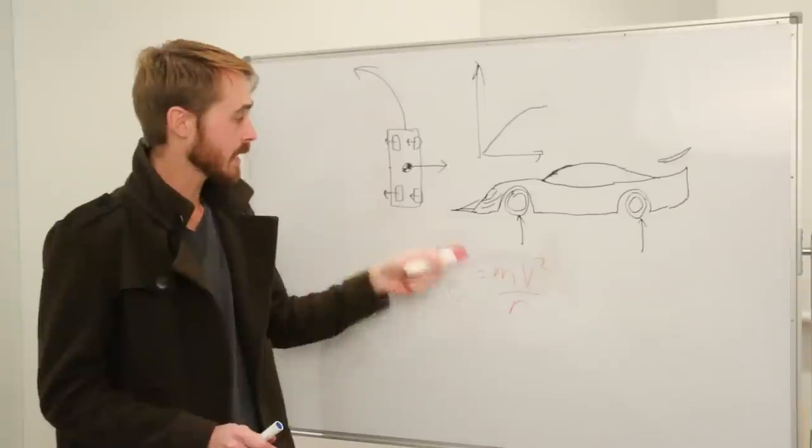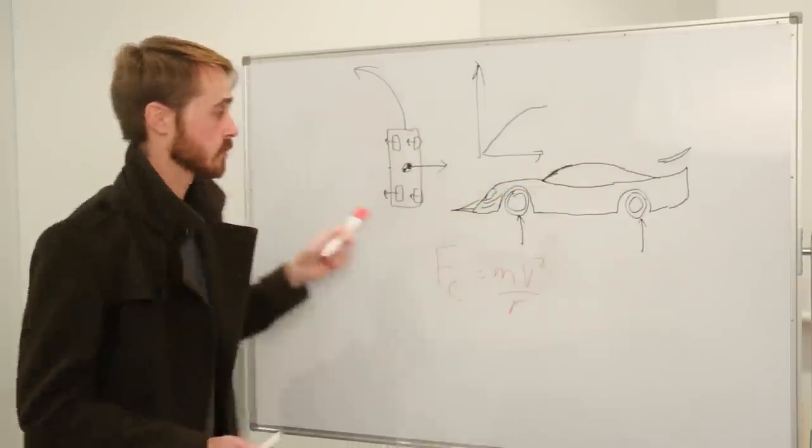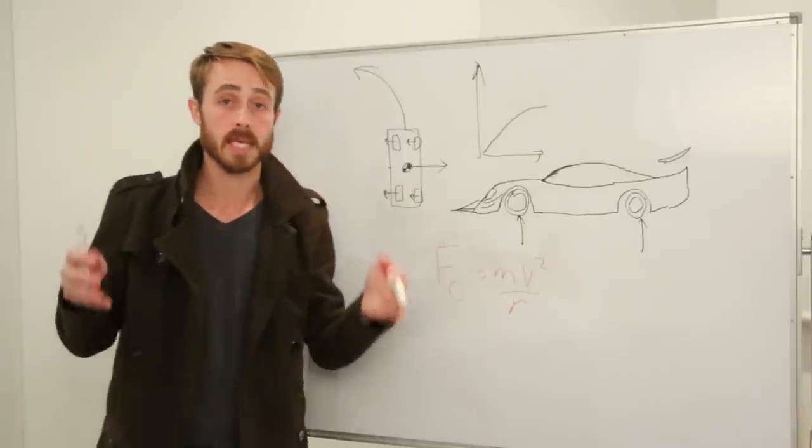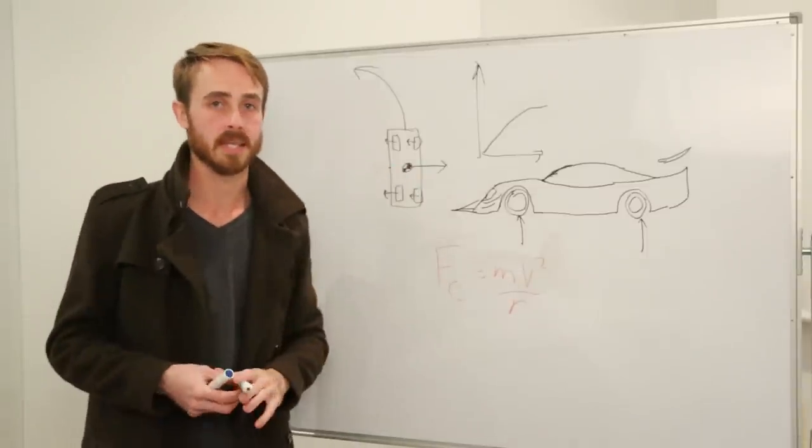So we want to increase our grip force, we can do that by increasing our downforce. So with that out of the way we know now more downforce equals more grip, but exactly how much more grip does it equal?